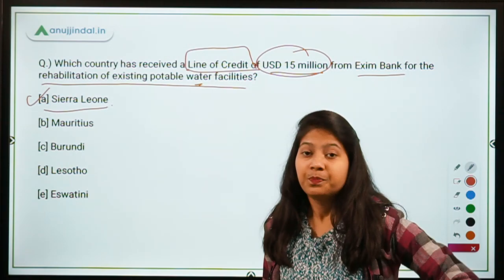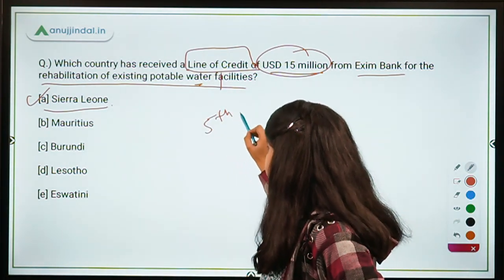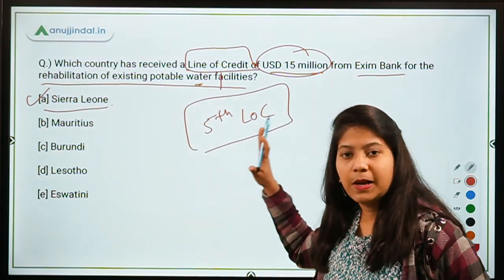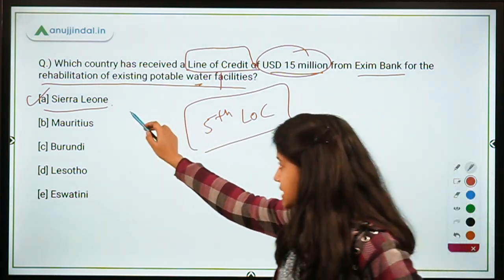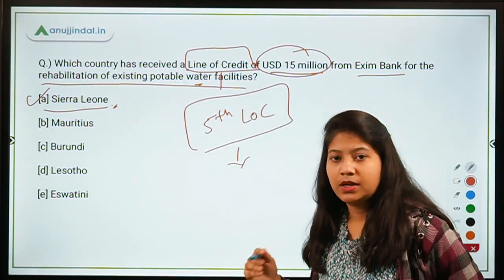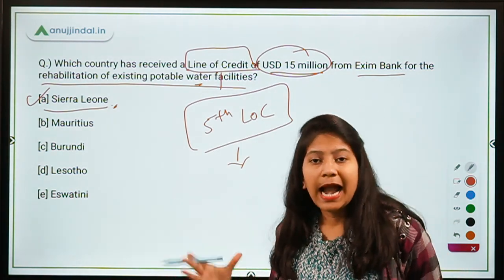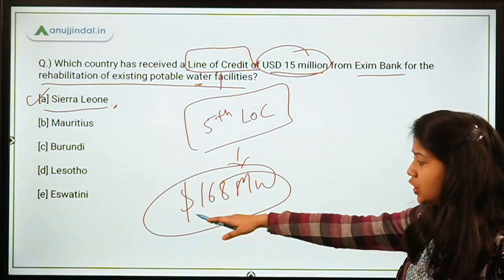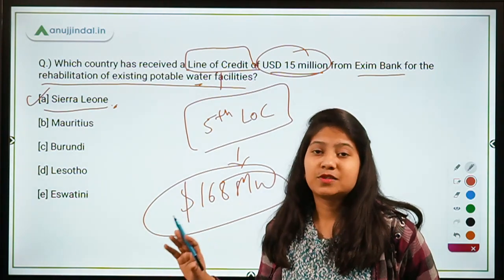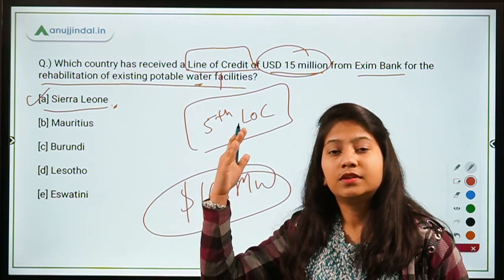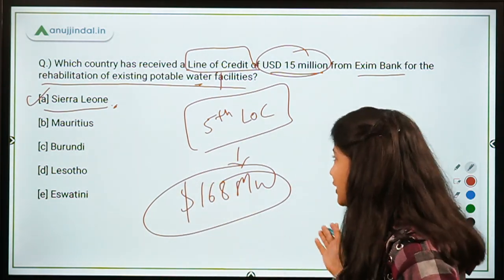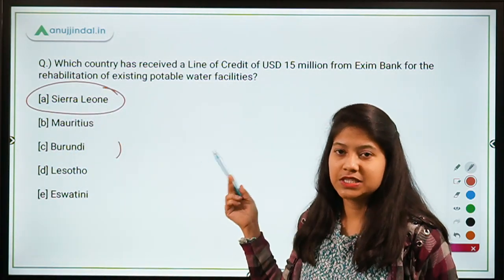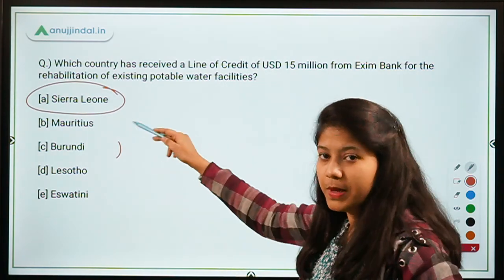This is the fifth line of credit being granted by EXIM Bank to Sierra Leone, a western African country. The total cumulative value of all five LOCs granted by EXIM Bank on behalf of the Government of India to Sierra Leone is approximately USD 168 million. My question for you: what are the capital and currency of Sierra Leone? Mention it in the comment section below.